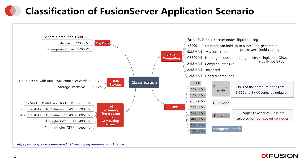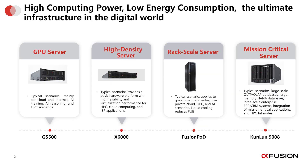For more resources, you can reference our XFusion official website, going to the products and solutions page for more detailed and comprehensive information. Here is a short summary of our servers with high computing power and low energy consumption. RG5500 is mainly used for cloud and internet, AI training and reasoning, and HPC scenarios. X6000 provides a basic hardware platform with high reliability and virtualization performance for HPC, cloud computing, and ISP applications.